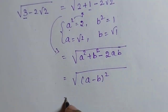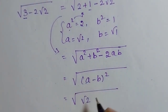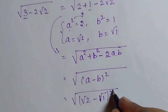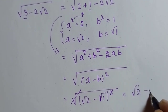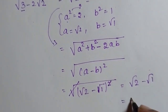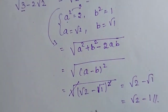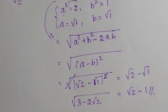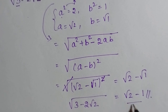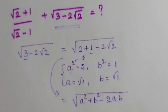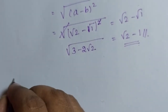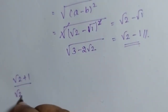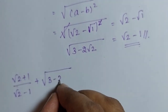Substituting the values: the root of (√2 − √1) whole square. The square and root cancel, so I get √2 − √1, which is √2 − 1. So the value of √(3 − 2√2) = √2 − 1. Now the actual question is: (√2 + 1) / (√2 − 1) + √(3 − 2√2).